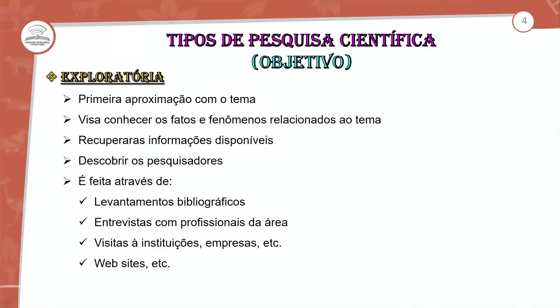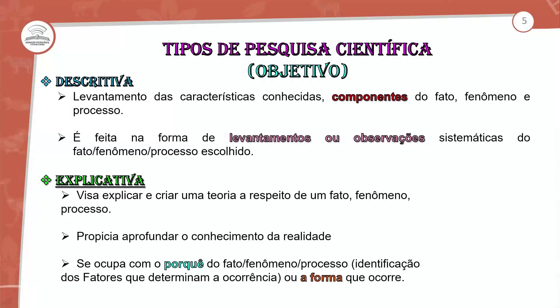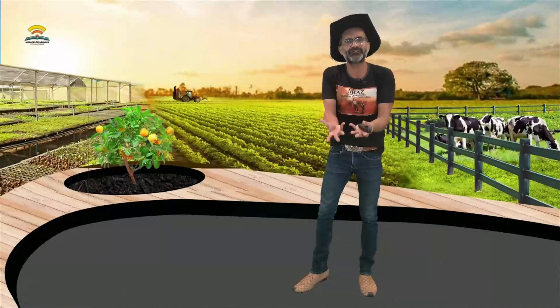Pesquisas descritivas: levantamento das características conhecidas, componentes dos fatos e fenômenos e os processos. É feita na forma de levantamento e observação sistemática. Quando a gente observa, ela é descritiva — você descreve o que observou. A pesquisa descritiva serve para você descrever tudo o que observa, comparar um determinado padrão — o que é observado versus o que seria esperado quando você fez uma determinada atividade.